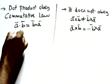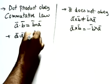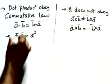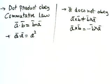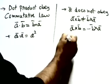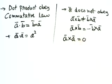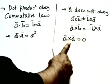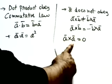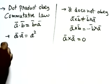Now, a·a = a² (the square of the magnitude), and the vector becomes only a scalar number. Whereas a×a = 0, because the sine of the angle between a vector and itself is sin(0°) = 0. So the cross product of two identical vectors is always zero.